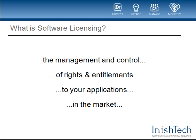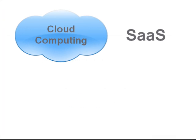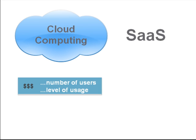Licensing has traditionally played an important role in helping software developers to manage and control how their applications are used and who gets to use them. It's always been an important piece of the jigsaw puzzle for software companies building and selling commercial-grade applications. But now with the move to cloud computing, the software business is changing beyond recognition. Many software companies no longer actually sell software — they simply provide their customers with access to a service for which they charge a monthly fee based on some metric like number of users or level of usage of the application.